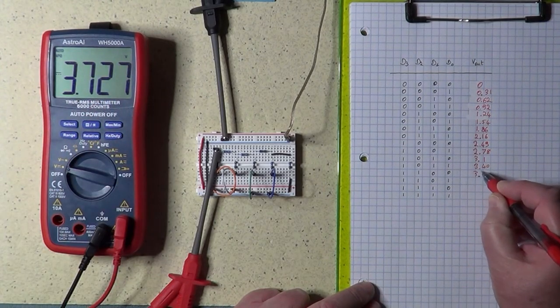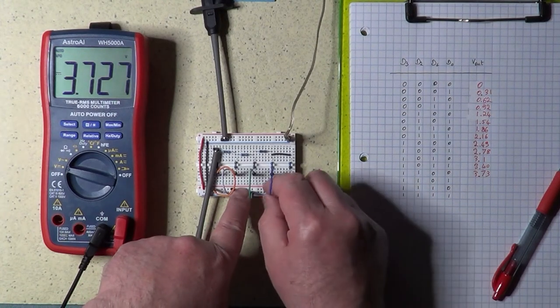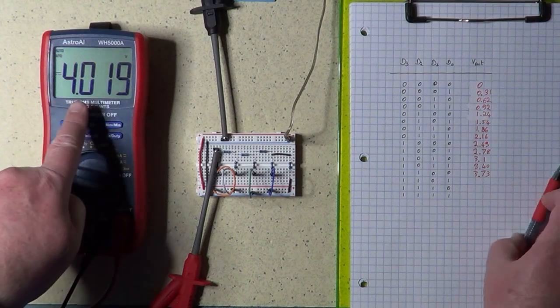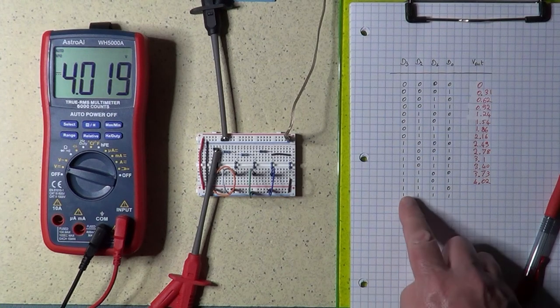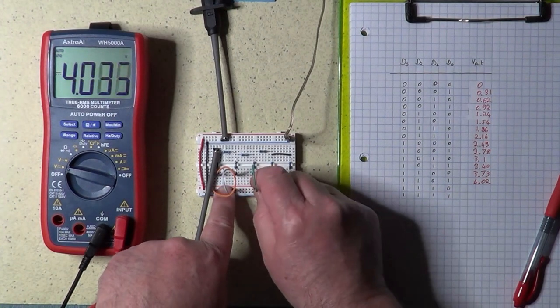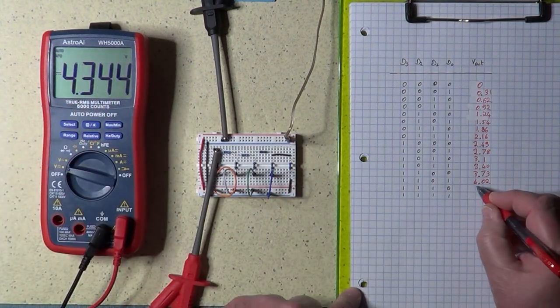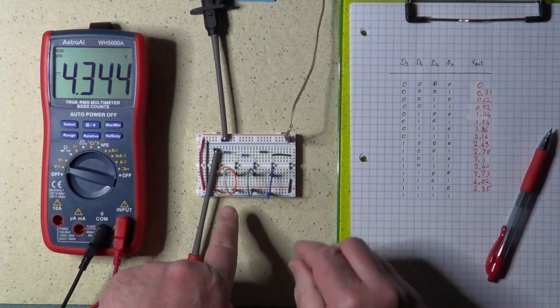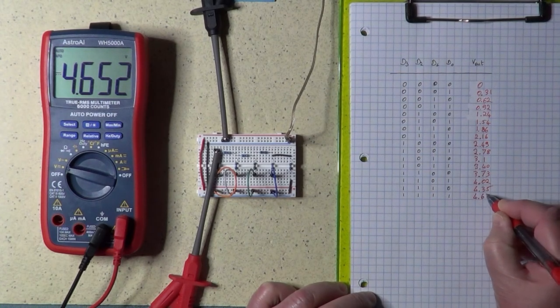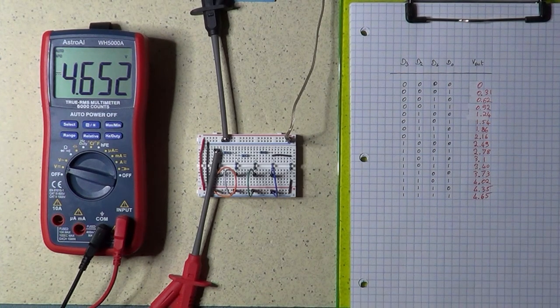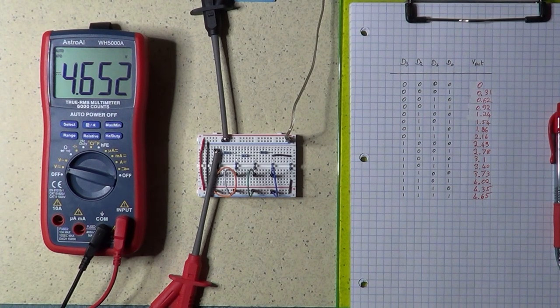And then 1100, which is 3.70. And then 1101, which is 4.0. And then 1110, and 4.35. And finally, 1111, which is 4.65.